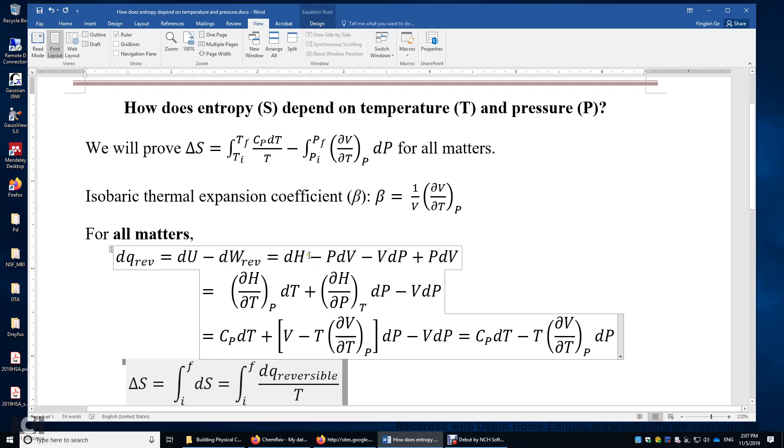Therefore, we have a negative PDV and a positive PDV canceling each other. DH can be expressed as a combination of the variation with temperature and the variation of enthalpy with pressure. And then we copy this minus VDP here.